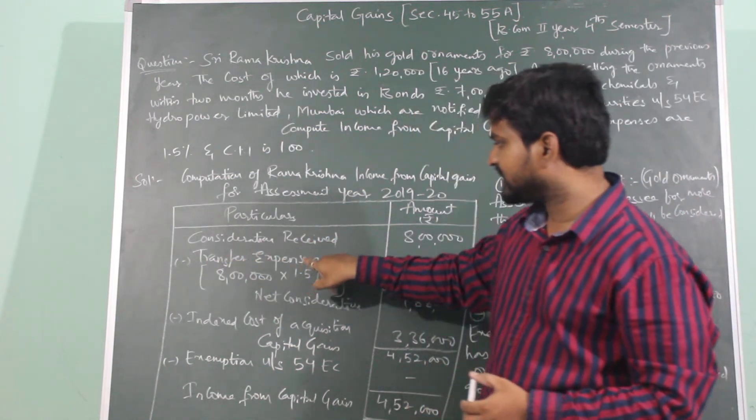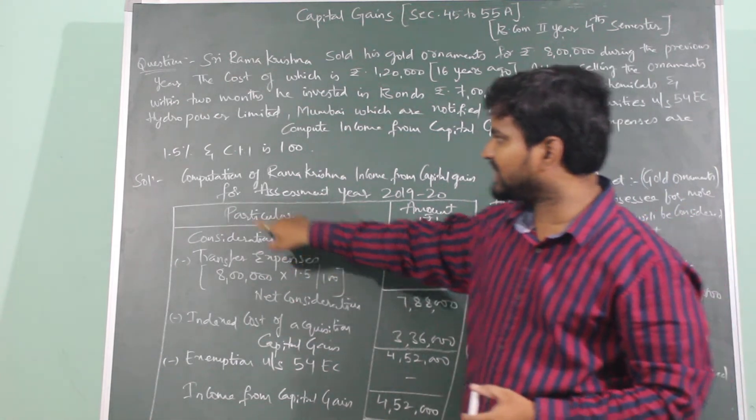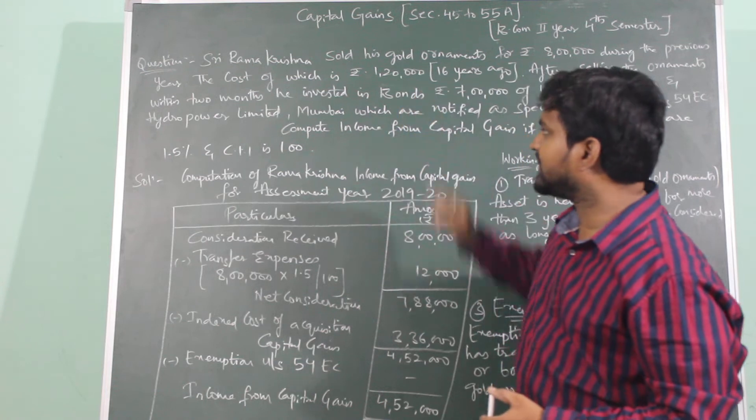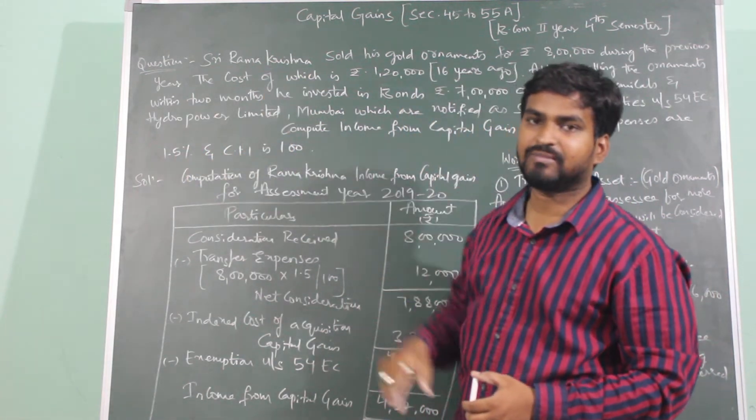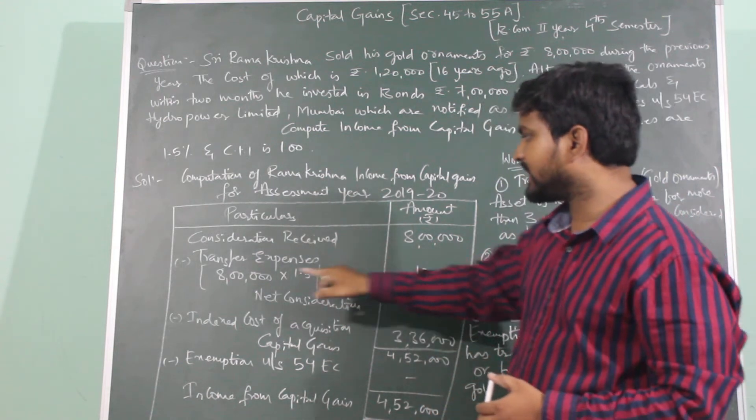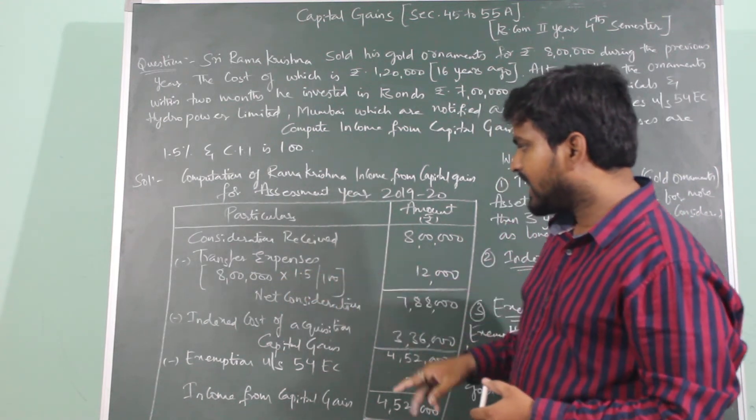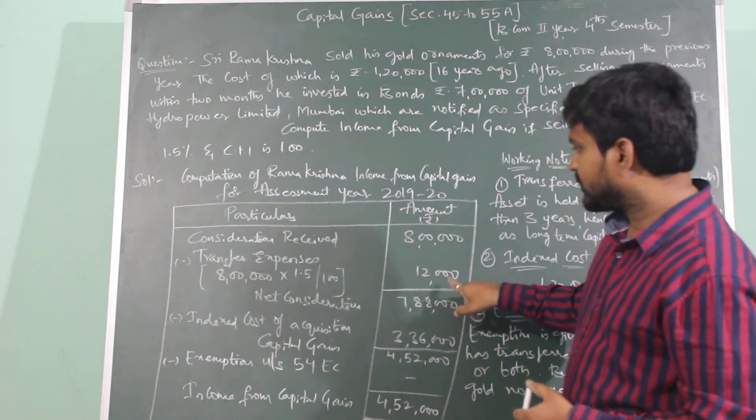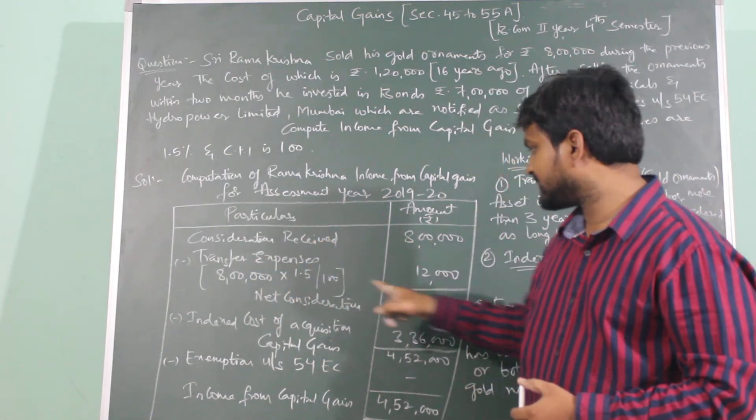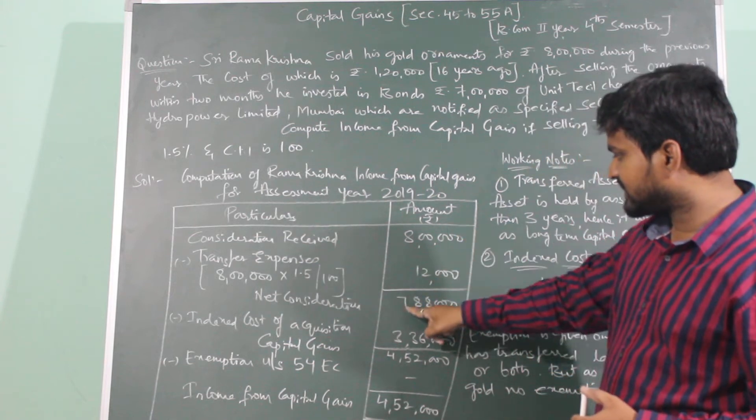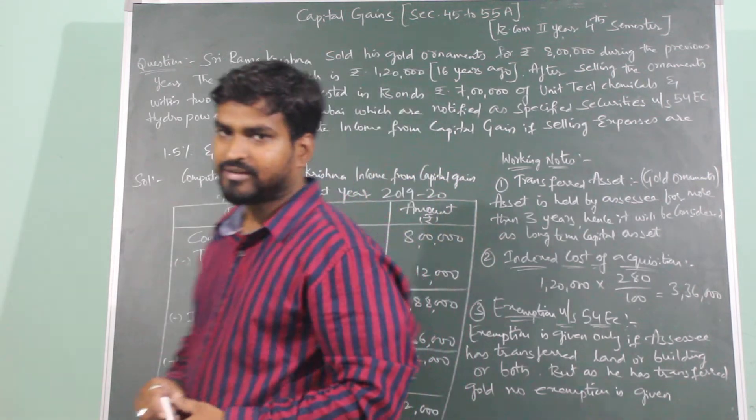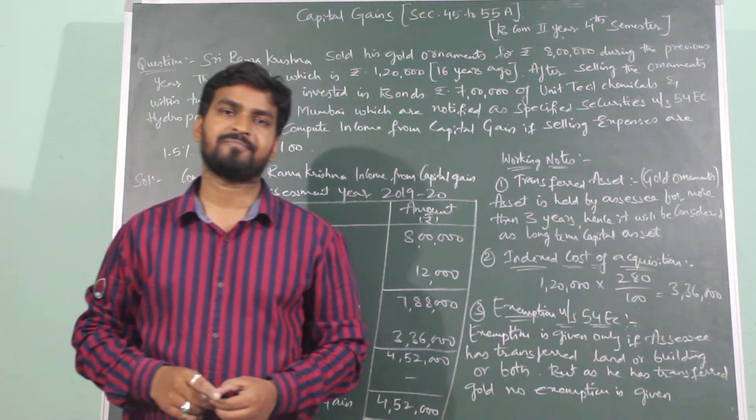What will we minus? Transfer expenses. Transfer expenses in this problem is given as a percentage, 1.5%. Transfer means sale. So this percentage is the percentage of the consideration received. How much do you sell? 8 lakhs. 8 lakhs into 1.5 divided by 100, which works out to be 12,000. So, consideration received is 8 lakhs minus transfer expenses 12,000. So, net consideration is 7 lakh 88,000.